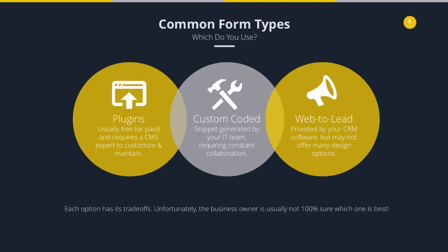A very common and increasingly popular option is a web-to-lead form. A lot of CRMs offer these, but the challenge is they're usually structured to collect basic information like first name, last name, and email address. When you get into more advanced redirection things — like wanting to do a white paper download — it starts to get more complicated. Some CRMs also put a limit on the number of forms you can create, so if you're on a free or lower-cost plan, you have to decide whether to upgrade your CRM package just to get additional web forms.